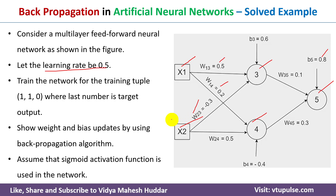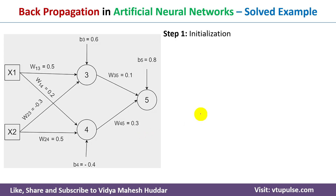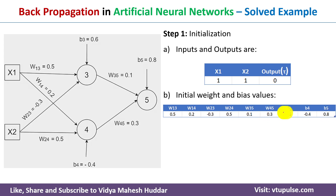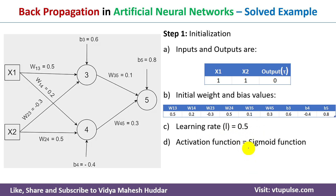Assume that the sigmoid activation function is used in the network. In the backpropagation algorithm the first step is initialization. The inputs are x1 = 1 and x2 = 1, and the target output is 0 as defined in the problem. These are the initial weights and biases, and the learning rate l = 0.5. The sigmoid activation function is defined as: sigmoid(x) = 1 / (1 + e^(−x)).